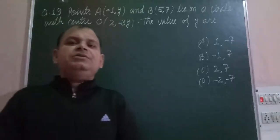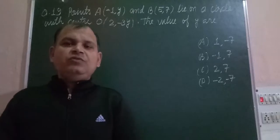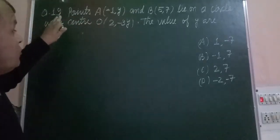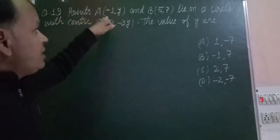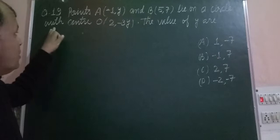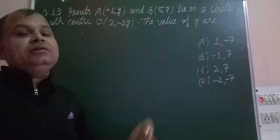Hello students, welcome to CVSC Town 1st 2020 board paper solution. Here is a question from coordinate geometry. The question says that points A(-1, Y) and B(5, 7) lie on a circle with center O(2, -3). Find the value of Y.